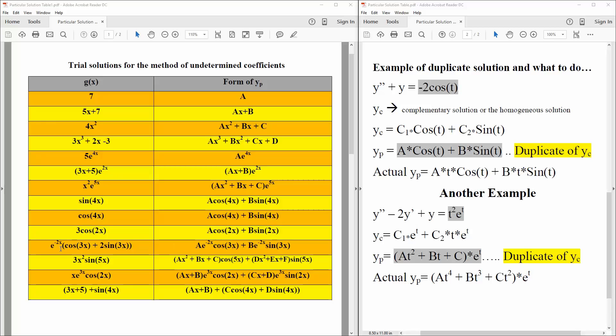And now we have e raised to the negative 2x, times cosine 3x, plus 2 sine 3x, so we would get ae raised to the negative 2x, cosine 3x, plus b, e raised to the negative 2x, sine 3x.